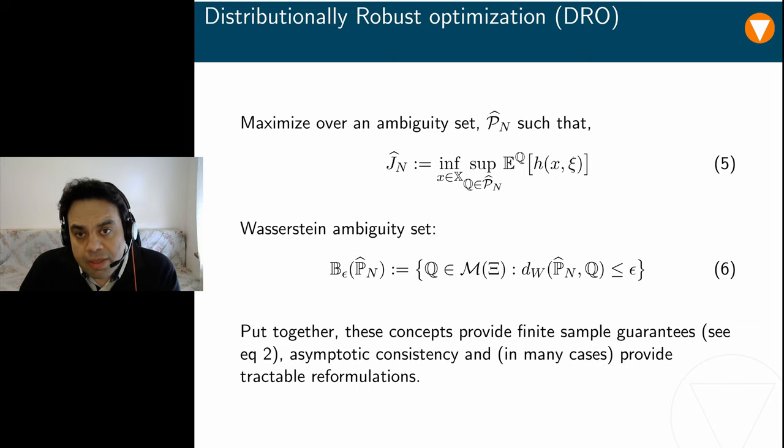Specifically, we designed a so-called ambiguity set P containing all distributions that could have generated the available training samples with high confidence. This ambiguity set enables us to define the data-driven decision x̂ₙ and the certificate Ĵₙ as the optimal value and an optimal solution of a distributionally robust optimization, or in short, DRO problem, which is described of the following form. Now, let me also say a few words about the choice of the ambiguity set in this setting.